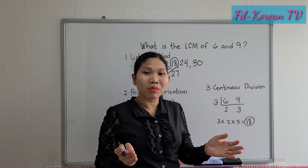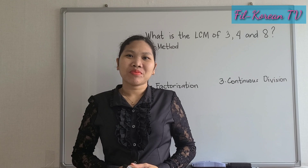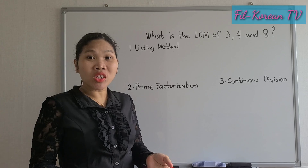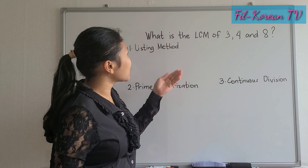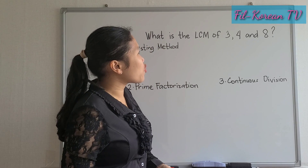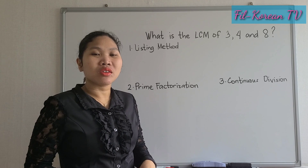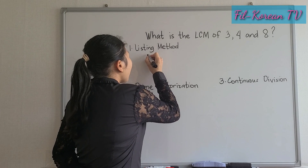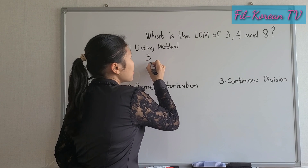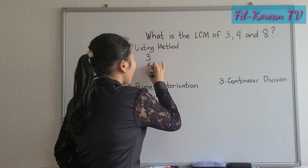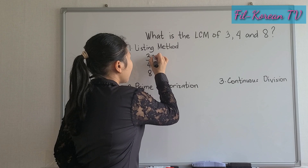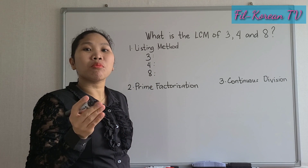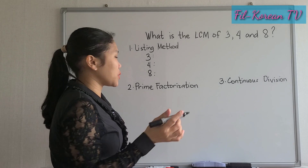Three methods but the same answer. Let's have another example. The question is: what is the LCM of 3, 4, and 8? There are 3 given numbers. So we will write the 3 numbers here — 3, 4, and 8 — and list the multiples of the given numbers.